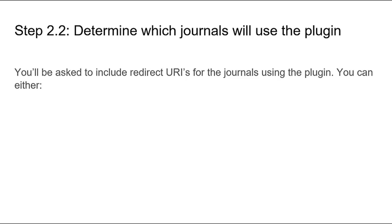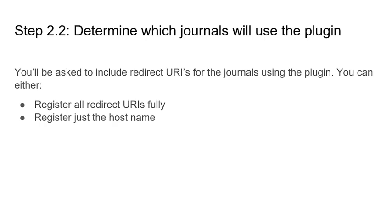When you complete the member API application form, you will also be asked to include redirect URIs for the journals that will be using the plugin. It's a good idea to consider now which journals will be using the plugin so that you are prepared to complete the form. You have two options for listing redirect URIs. You can register all of the journals' URIs separately, or you can register just the host name for a collection of URIs. Let's look at those two options in more detail.